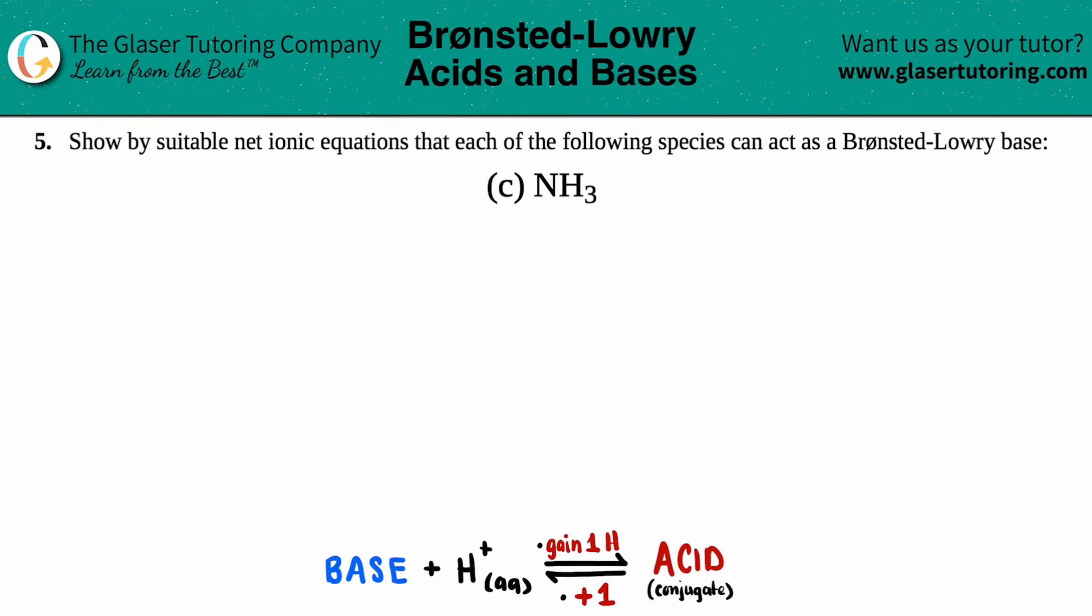Number five, show by suitable net ionic equations that each of the following species can act as a Bronsted-Lowry base, and then we have letter C. So in this case, we just have to write a net ionic equation explaining that ammonia, which is NH3, maybe I'll just put that here, this is your cleaning detergent, that lovely smell, ammonia, NH3, is a Bronsted-Lowry base.